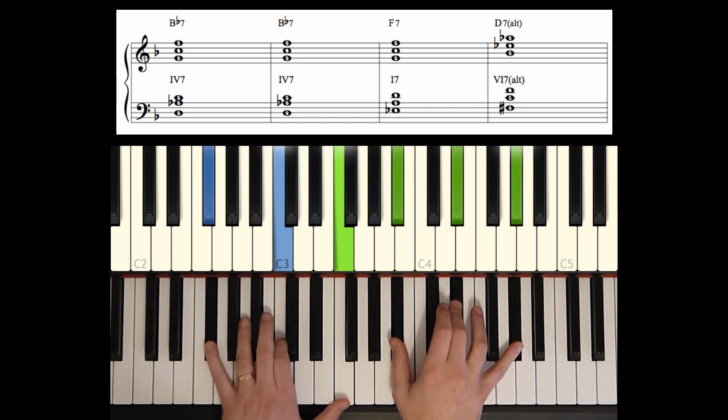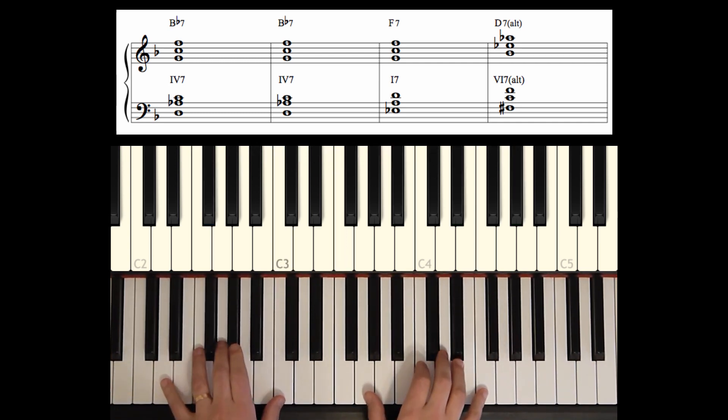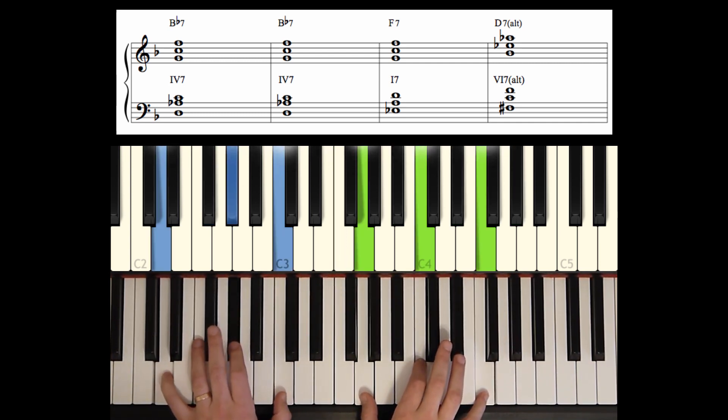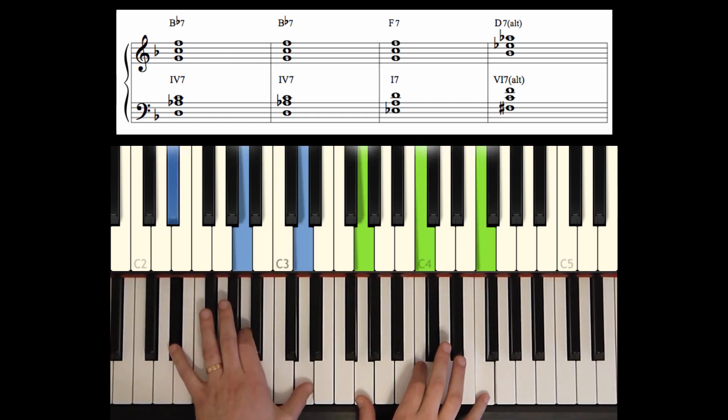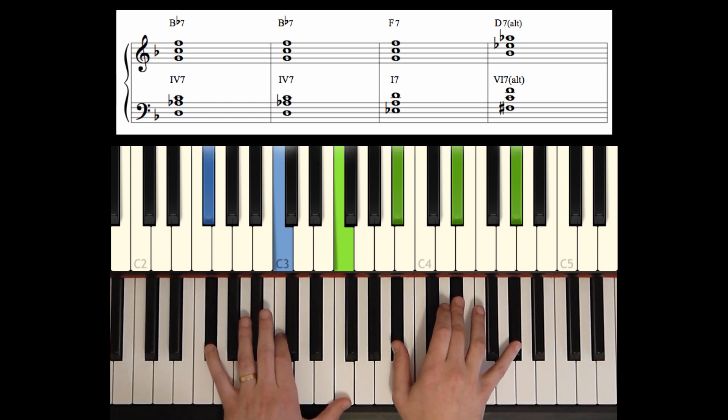So we call this an altered chord because it has a lot of the altered tensions. It has the altered 9, altered 13, and altered 11. So that's F sharp, C, F natural, B flat, E flat, E flat, and A flat. Let's play the second four measures of the blues in whole notes again. So B flat, 2, 3, 4, B flat, 2, 3, 4, F7, and then D7 altered.